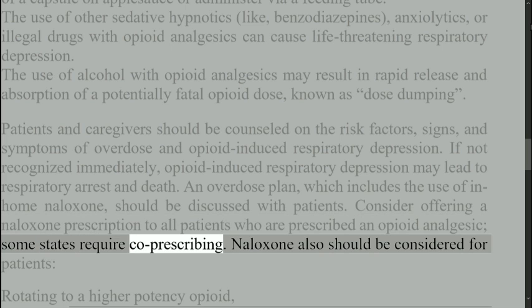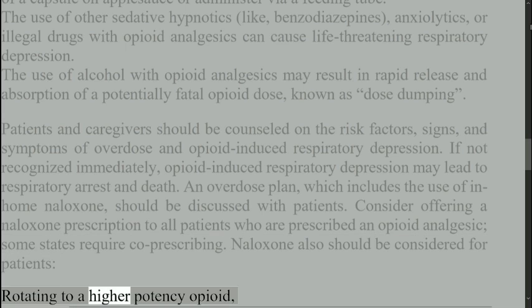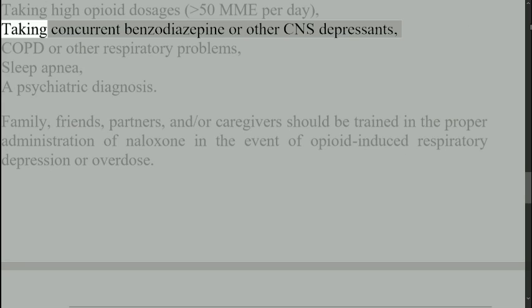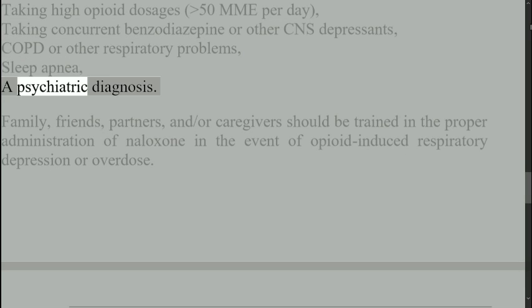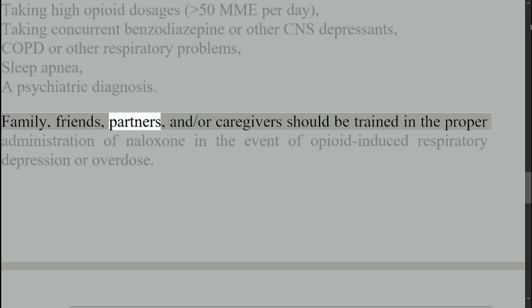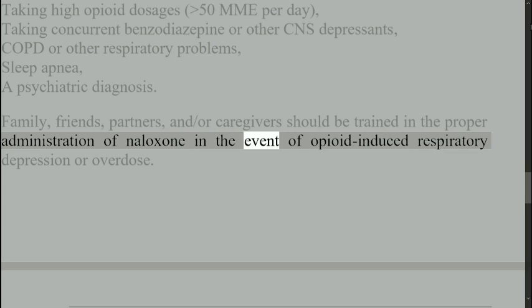Consider offering a naloxone prescription to all patients who are prescribed an opioid analgesic. Some states require co-prescribing. Naloxone should also be considered for patients rotating to a higher-potency opioid, with a history of non-fatal overdose or substance use disorder, taking high opioid dosages of 50 MME per day, taking concurrent benzodiazepines or other CNS depressants, with COPD or other respiratory problems, sleep apnea, or a psychiatric diagnosis. Family, friends, partners, and/or caregivers should be trained in the proper administration of naloxone in the event of opioid-induced respiratory depression or overdose.